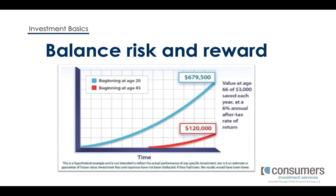Let time help you build your savings. Someone who invests three thousand dollars every year beginning at age 20 and gets a six percent annual after-tax rate of return would accumulate almost six hundred and eighty thousand dollars by age 66. Wait until 45 to start saving three thousand dollars each year at the same rate of return, and the amount accumulated by age 66 would only be about one hundred twenty thousand dollars.